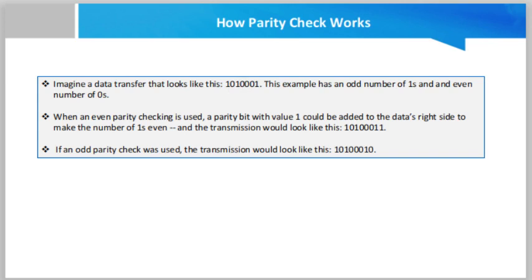When an even parity checking is used, a parity bit with value 1 could be added to the data's right side to make the number of ones even, and the transmission would look like 10100011.